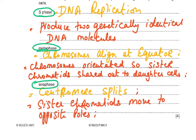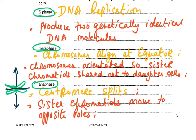In anaphase, we expect you to explain that the centromere splits in the middle, so one chromatid moves upward and the other moves to the opposite pole. Once they are separated, the sister chromatids are no longer called sisters — they are now called chromosomes — and they move to the opposite poles.